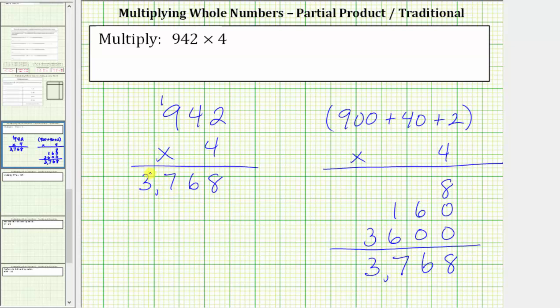Whichever method we use, the product is 3,768. I hope you found this helpful.